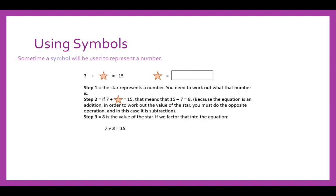Using symbols, sometimes a symbol will be used to represent a number. We've got 7 plus a star equals 15. You need to work out what the star is representing. So the star represents a number, so you need to work out what that number is. If 7 plus the star is 15, that means 15 minus the 7 will give you the number here. 15 minus 7 is 8. Because the equation is an addition, in order to work out the value of the star, you would need to do the opposite operation, which in this case would be subtraction. You can double check this and factor this number into the equation. So 7 plus 8 is 15, so you know that you can check your answer by putting that number into the equation.